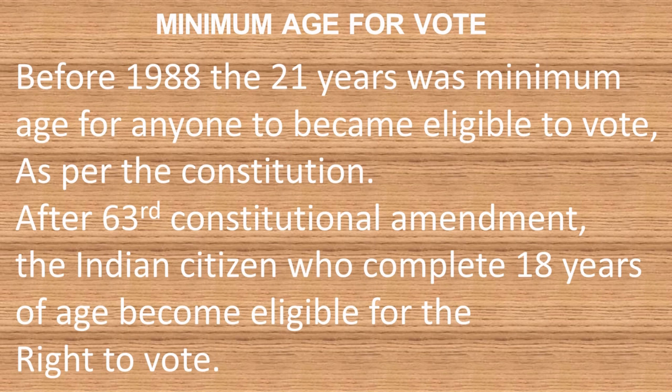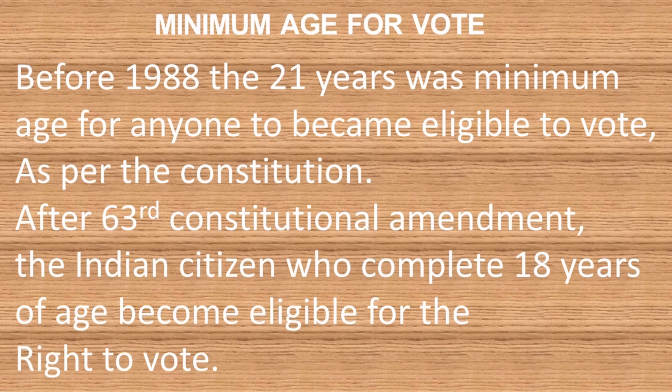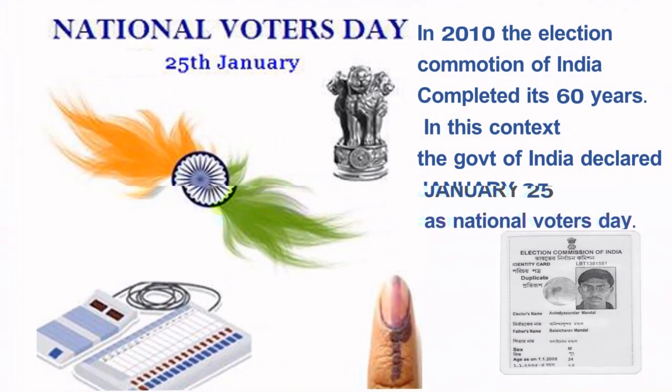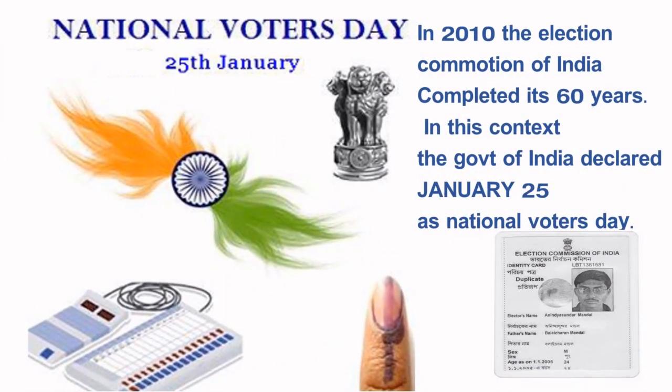Before 1988, the minimum age for anyone to become eligible to vote was 21 years, as per the Constitution. After the 63rd Constitutional Amendment, any Indian citizen who completes 18 years of age became eligible for the right to vote.